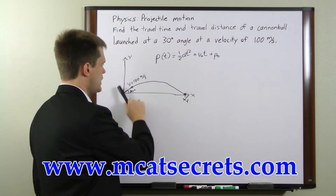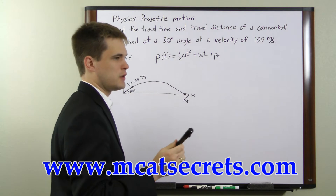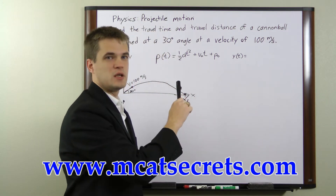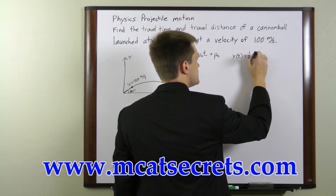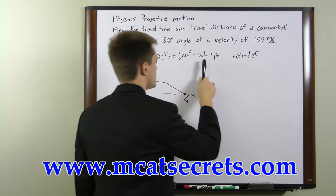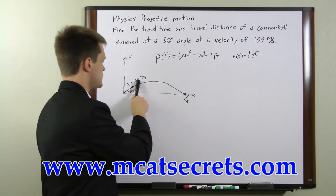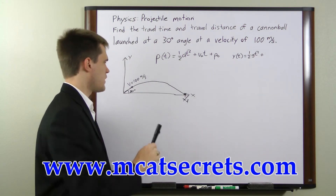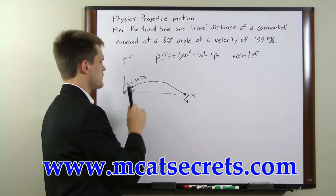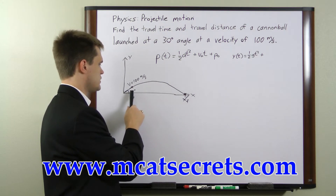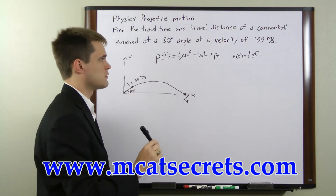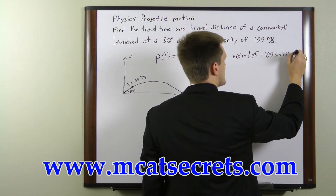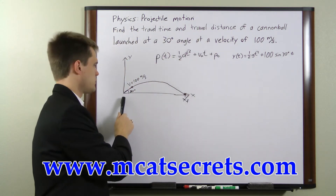For the Y direction, the equation of motion is going to look like: Y at time t equals — your only acceleration is due to gravity, so we'll call that g — one-half g t squared, plus your initial velocity. The initial velocity is 100 meters per second, but that's not in the Y direction; that's at 30 degrees off of the X direction. So we need to find the Y component of this velocity, which is going to be 100 meters per second times the sine of 30 degrees. So we have 100 times sine of 30 degrees times t. The initial Y position is 0 because it starts at the origin.